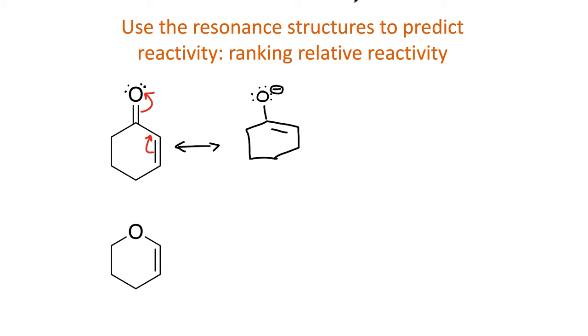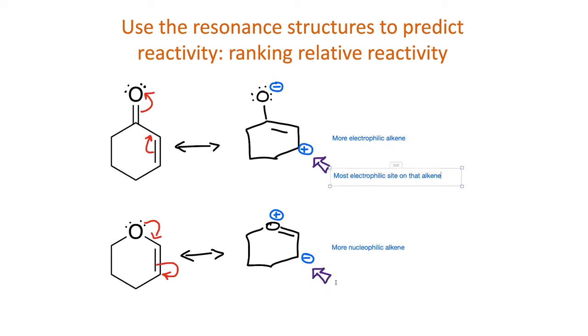We can also use the resonance structures to compare between structures. In the top molecule, resonance indicates that electron density is decreasing in the alkene. In the bottom molecule, resonance indicates electron density increasing in the alkene. Comparing the two, the top alkene is the more electrophilic, and the bottom alkene is the more nucleophilic.